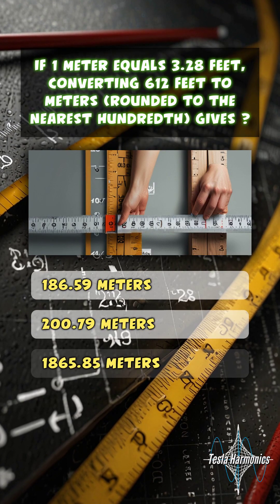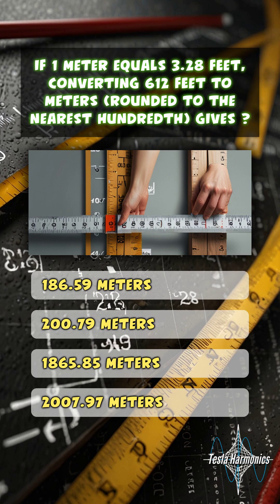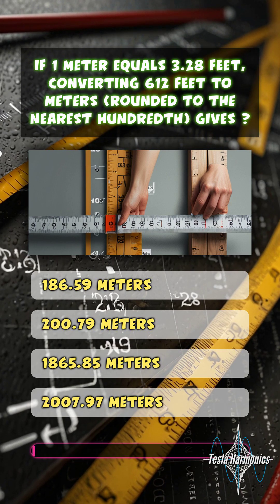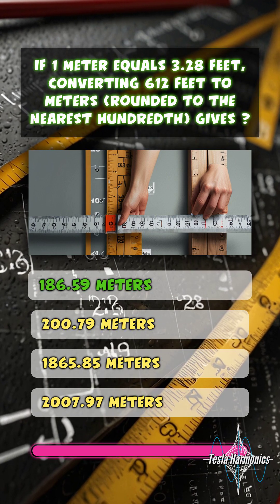If 1 meter equals 3.28 feet, converting 612 feet to meters rounded to the nearest hundredth gives 186.59 meters.